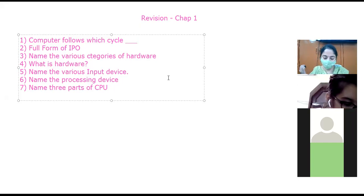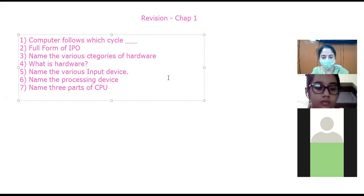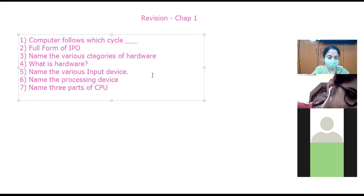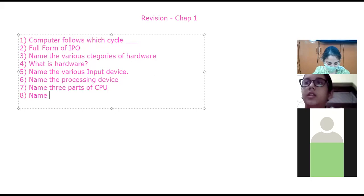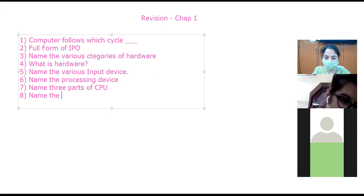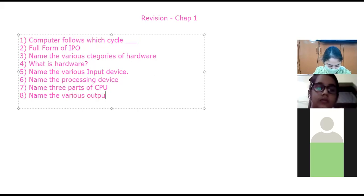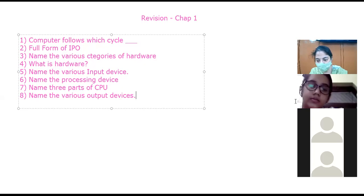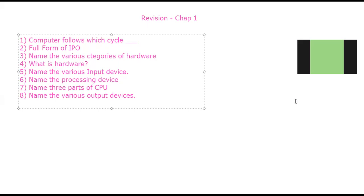What is the use of the ALU? It performs all the arithmetic and logical operations. What is the use of output devices? They are used to give results or display the result in various forms after processing. Name the various output devices: monitor, speaker, printer, plotters, projector, headphone — all these are output devices.